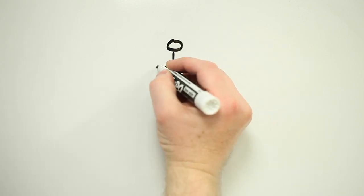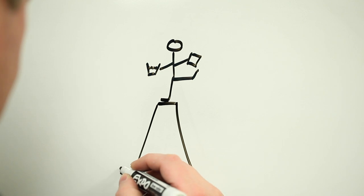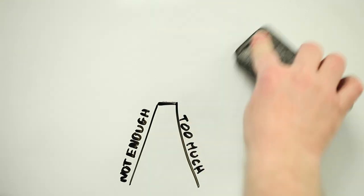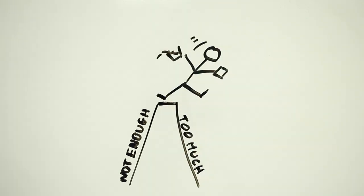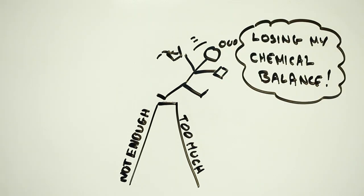To stay alive and thrive our bodies pull off an incredible balancing act between making use of the stuff we breathe and eat and are otherwise exposed to and making sure it doesn't kill us. The trouble is it's a balancing act that can too easily be disrupted. Too much or too little of something and the whole system begins to get out of whack.